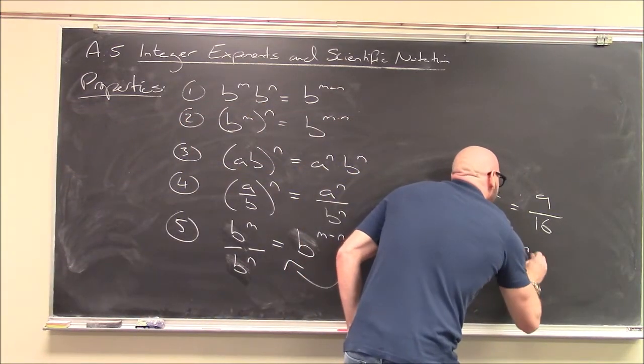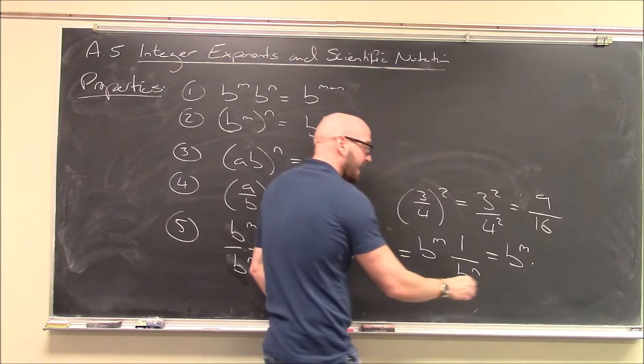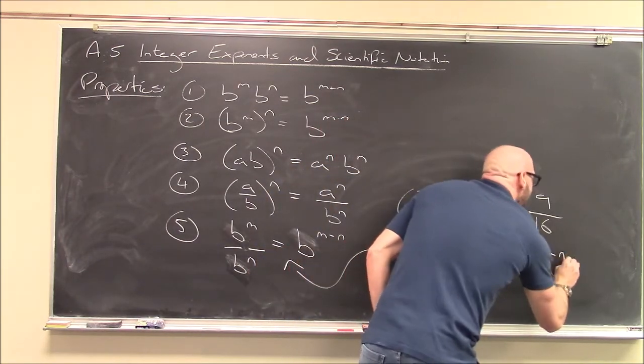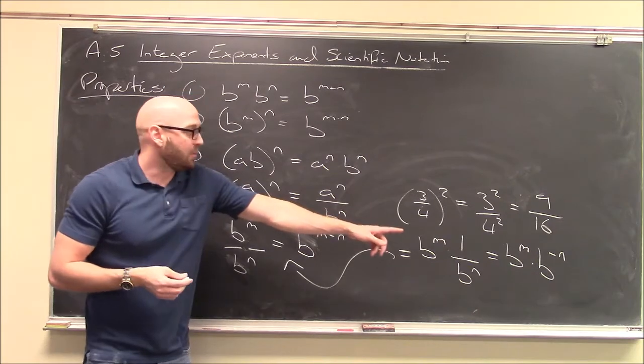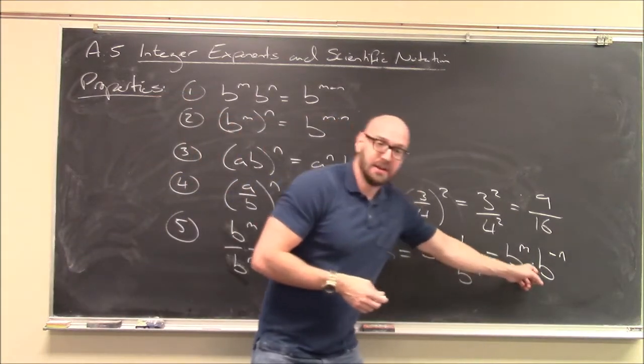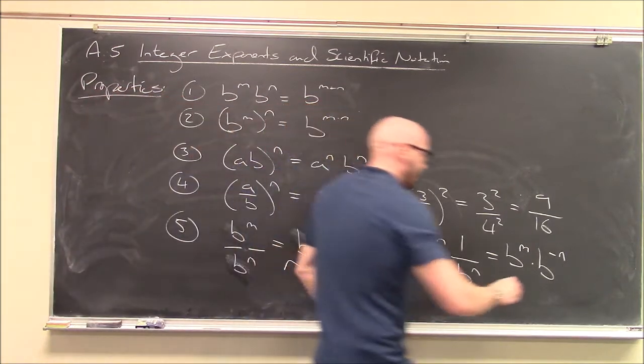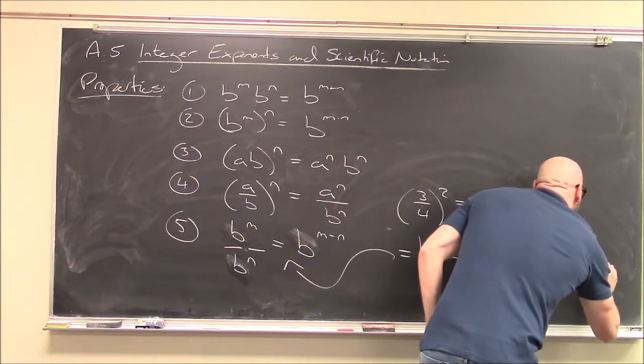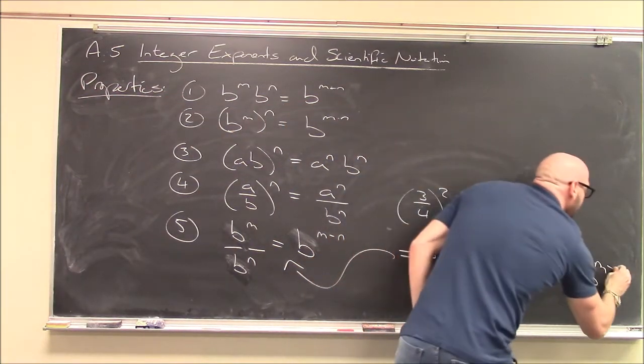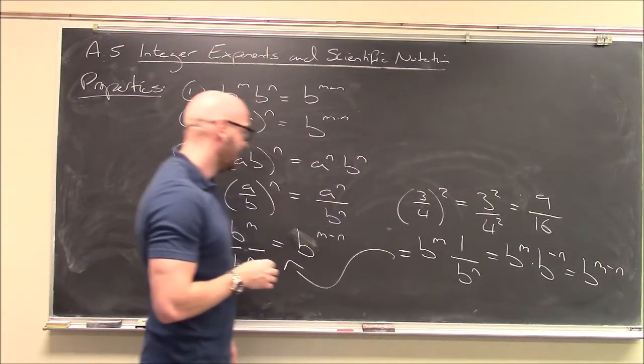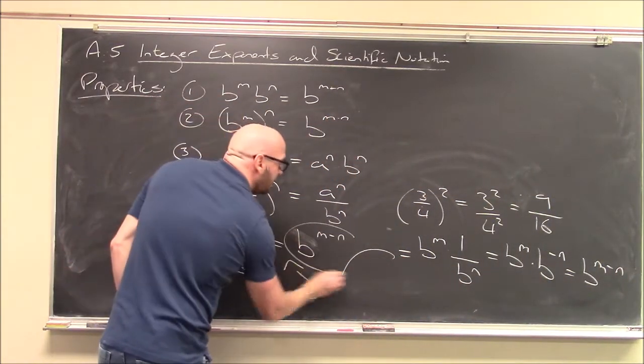And now using property number 1, how do we handle multiplying two bases together to different exponents? Well, you add them together. So this becomes b to the m plus minus n, which is m minus n. And that is exactly what I have right here.